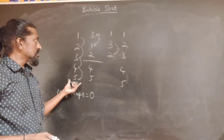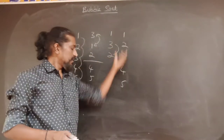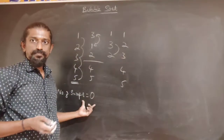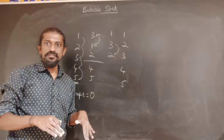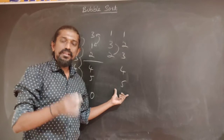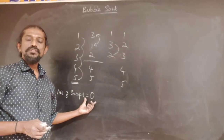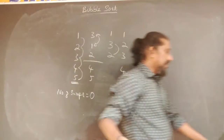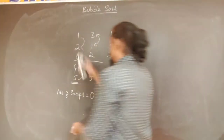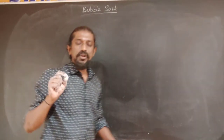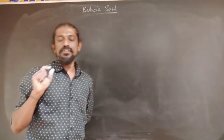The conclusion is: in whichever pass the elements get fully sorted, the very next pass will have zero swaps. As soon as the number of swaps in a pass equals zero, we can stop the bubble sort algorithm. This does not improve the order of growth — it remains quadratic — but it can significantly improve running time.